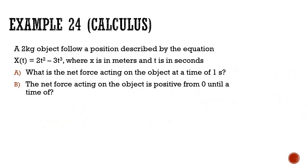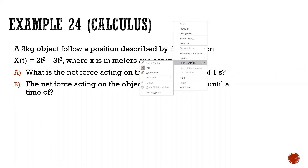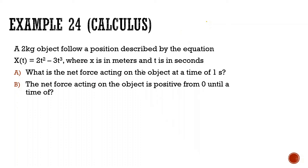We'll finish with calculus problems. A 2 kg object follows position x = 2t² − 3t³, where x is in meters and t is in seconds. What is the net force acting on the object at t = 1 second?